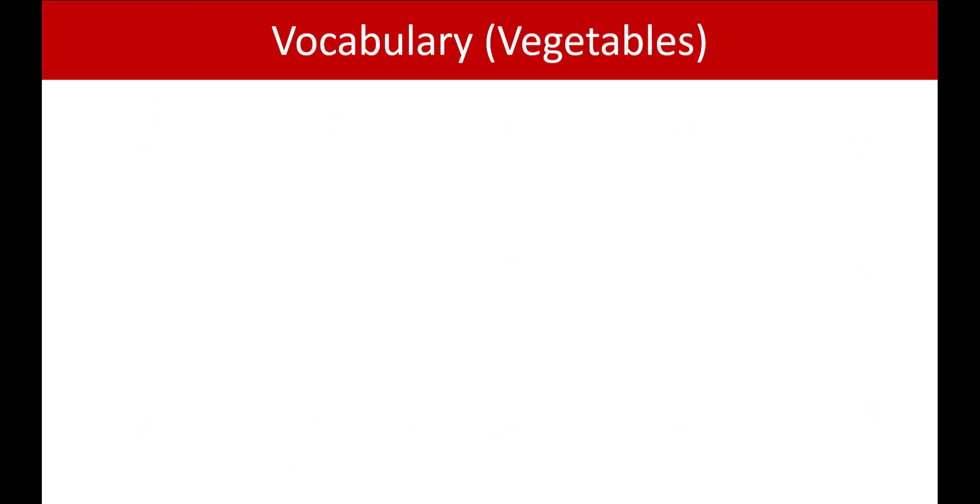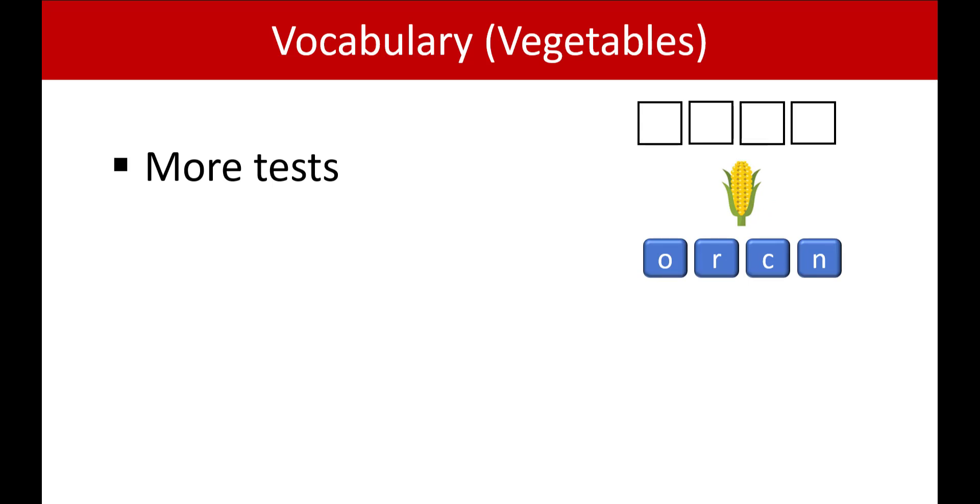If you're watching this on YouTube, there is a link in the description to more tests. For example, the spell the word test. So this is corn. C, O, R, N, corn. This is correct.